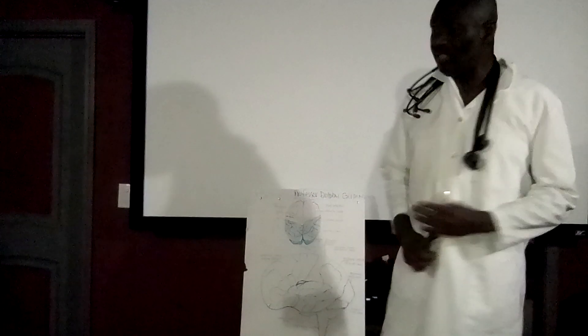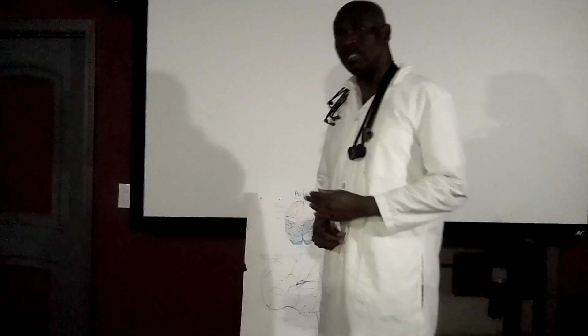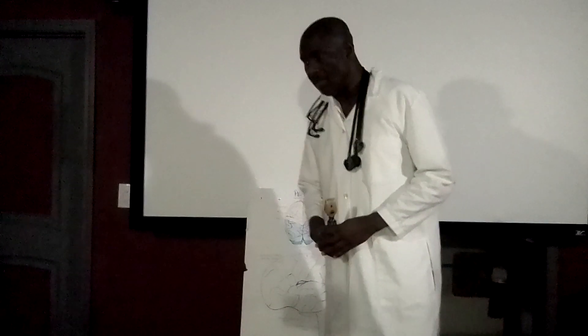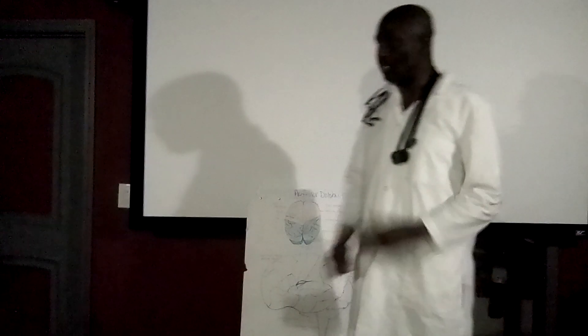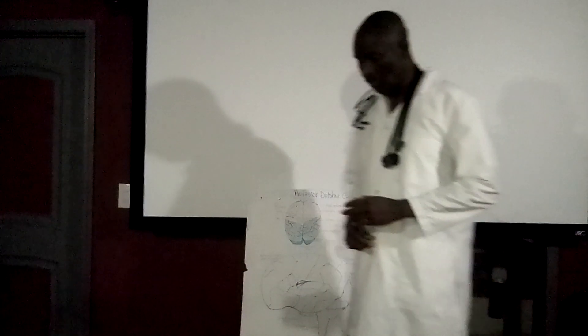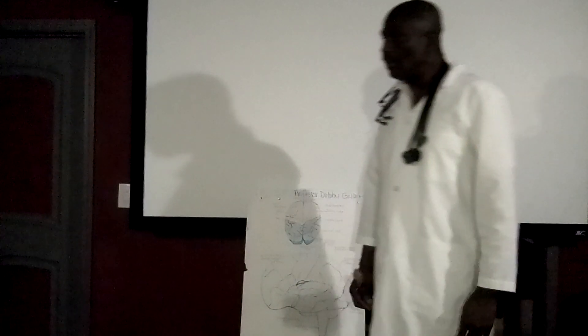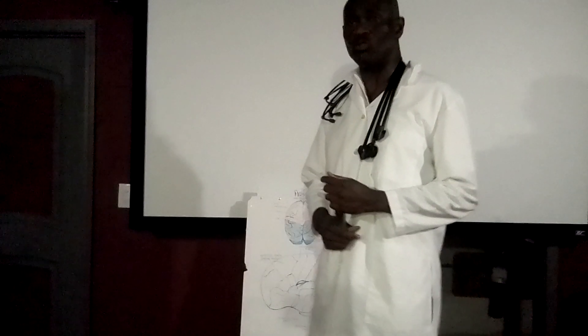TIA, Transient Ischemic Attack, is a mini stroke. This is when the blood supply to part of the brain is blocked, or briefly blocked. This can last from minutes to within an hour. It's almost like a full stroke but it doesn't last as long as a full stroke.